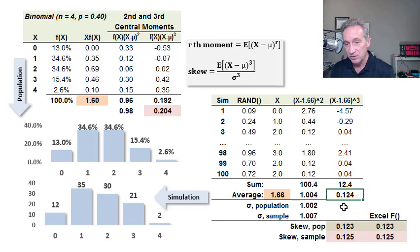My third central moment here is 0.124, and you can see the population has 0.192. So I have the sampling variation. I expect it to have this value, but it ends up here for this sample.